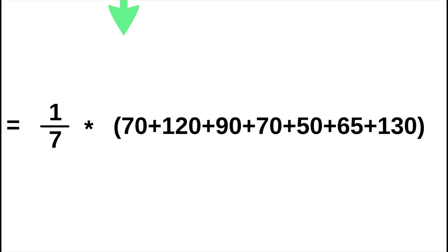Substituting into the formula, we get mean equals 1 divided by 7 times 70 plus 120 plus 90 plus 70 plus 50 plus 65 plus 130. The mean is 85.